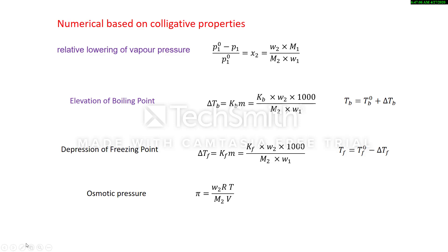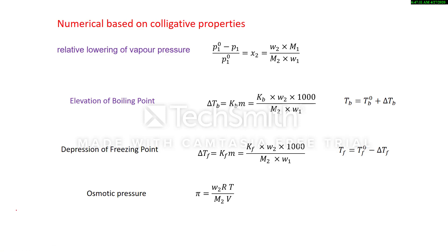In the previous video we discussed colligative properties. Now in this video we are going to discuss some numericals based on colligative properties. First, we will revise the formulas. For relative lowering of vapor pressure, this relation represents the relative lowering of vapor pressure, which is equal to the mole fraction of solute. If you put the values of x2, we will get this.